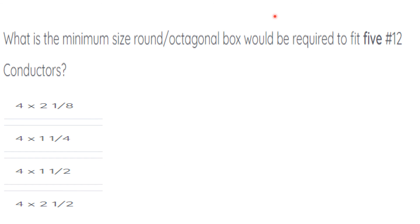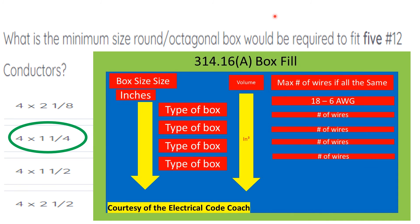What is the minimum size round octagonal box required to fit five number 12 conductors? The correct answer is a four by one and a quarter. To find this, head to 314.16(A), start on the left-hand side of the table, come down to the round octagonal box category, cross over to the number 12 conductors column, and come down to find the smallest box that will fit five conductors.